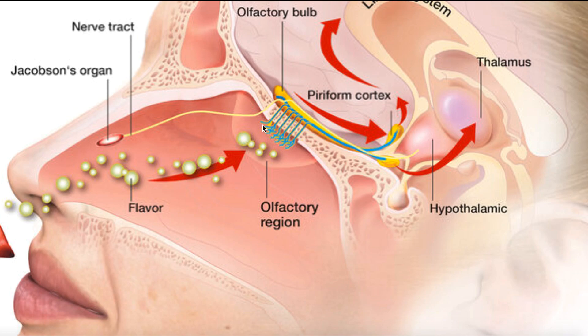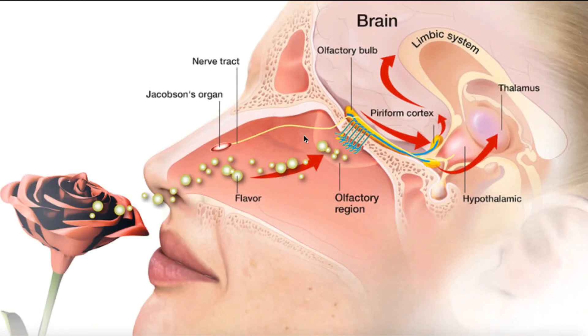On these receptor cells, on the end in the nasal cavity, there are little proteins — actual receptors. Odorants bind to those receptors, and when they do, that information regarding that molecule is transmitted up these cells into the olfactory bulb, through the olfactory tracts, and then to different parts of the brain involved in interpretation. That's how most smell is perceived.